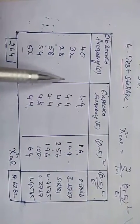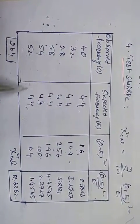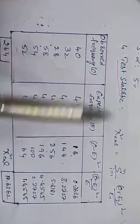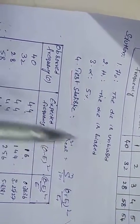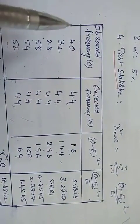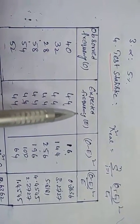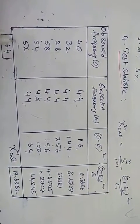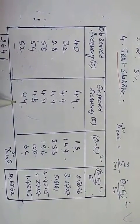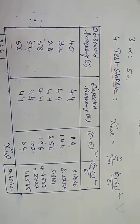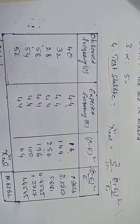The expected frequencies in this problem are simply the average of the observed frequencies — 264 divided by 6 equals 44. Since no additional information about a binomial distribution is given, we use this average as the expected frequency.